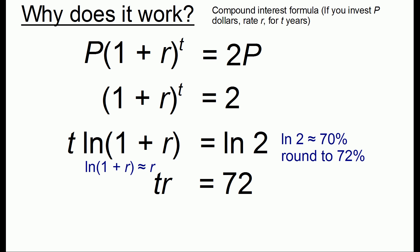Using these approximations, we have that T times R equals 72. That means the time to double is equal to 72 divided by the rate of return, and that's the derivation for the rule of 72.